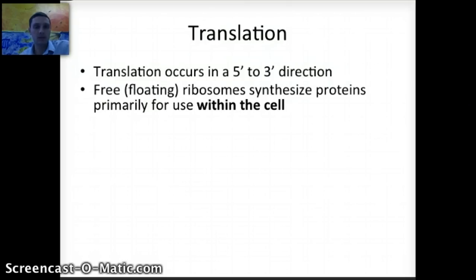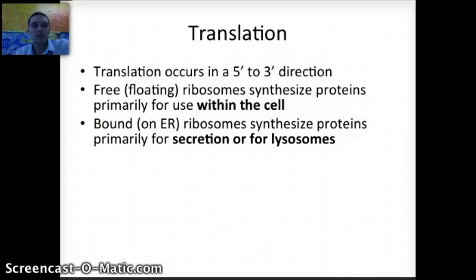There are a couple different types of ribosomes. We have free-floating ribosomes found in the cytoplasm, and then we also have ribosomes attached to the endoplasmic reticulum — the rough endoplasmic reticulum. The free-floating ribosomes are synthesizing proteins primarily for use inside the cell, while those found on the ER are primarily used to synthesize proteins for secretion or for use in lysosomes.